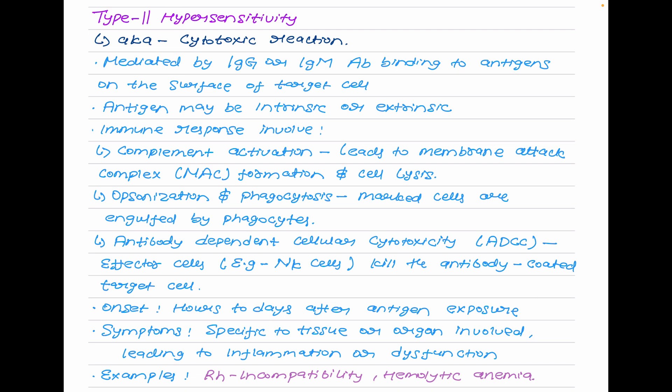The second mechanism is antibody-dependent cell-mediated cytotoxicity (ADCC). Cytotoxic cells bearing Fc receptors bind to the Fc region of antibodies on target cells, bringing natural killer cells into contact with antibody-coated targets. Lysis requires cell contact but not phagocytosis or complement fixation. Instead, ADCC lysis involves the release of cytoplasmic granules containing perforin and granzymes that activate apoptosis. ADCC reactions involve IgG and IgG Fc receptors.